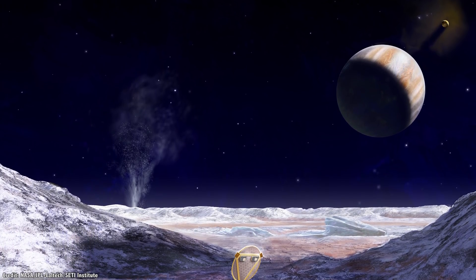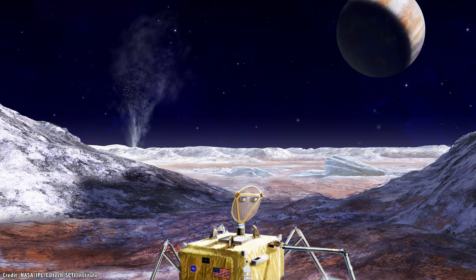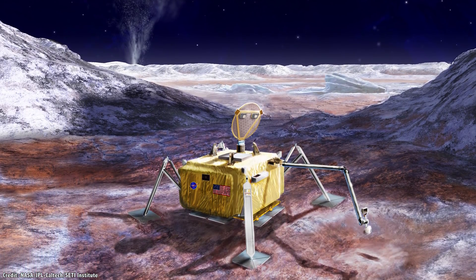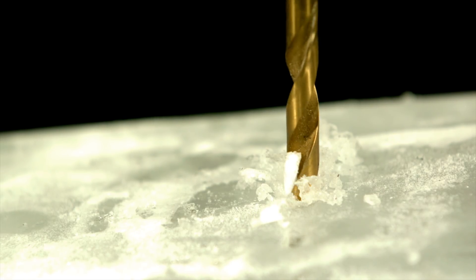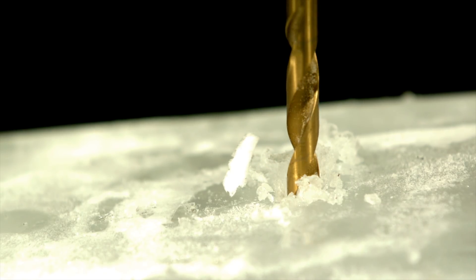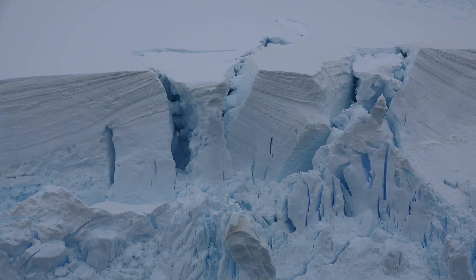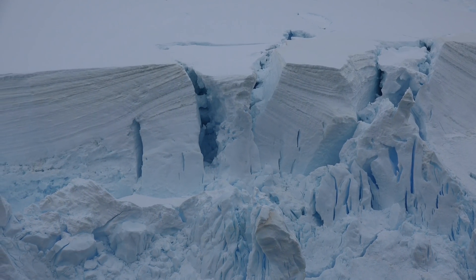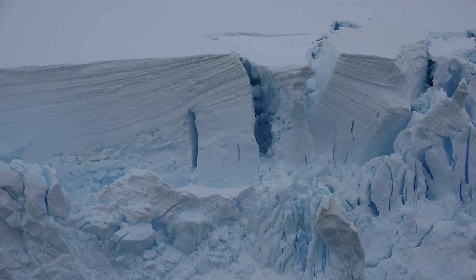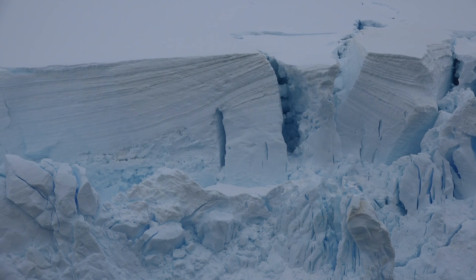When we last left our heroes, they had just landed on Europa, and were about to deploy drills to get beneath the thick ice shell. The landers would start drilling immediately to get as much of themselves under the ice as possible. Just a meter underneath the ice, and they would be exposed to one millionth less radiation. I say drill, but that's not exactly the best way to describe it.